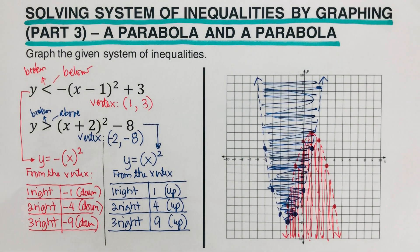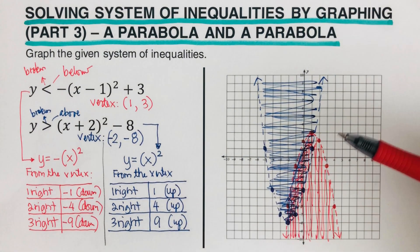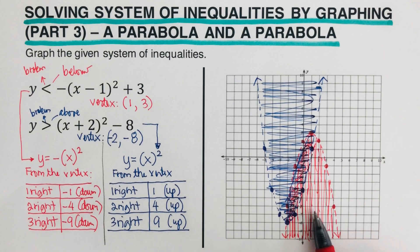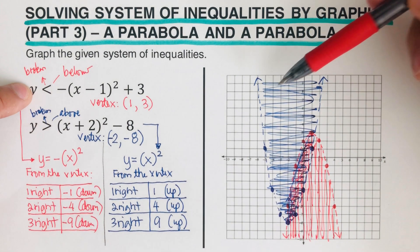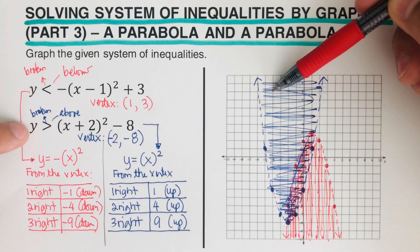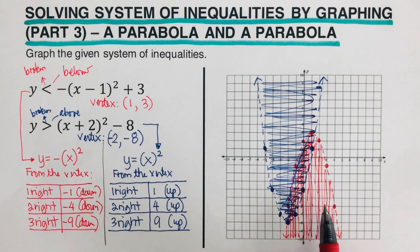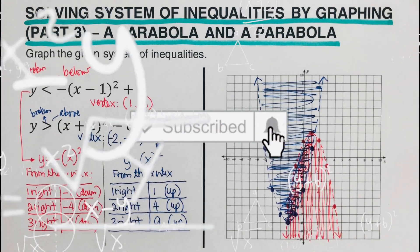From here we can determine that the point of intersection between these two is this overlapping portion, which is the solution to the system of inequalities. A point on only the red shading is a solution to the first inequality only; a point in only the blue shading is a solution to the second inequality only. The solution to the system is the portion where both the red and blue are overlapping. That's it — if you find this video helpful, hit like and subscribe for more math videos.